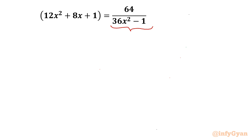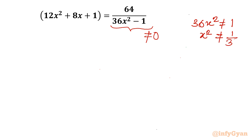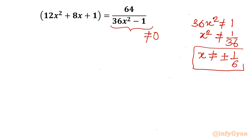The denominator cannot be equal to 0 for the solution to be real. So 36x² cannot be equal to 1, which means x² cannot be equal to 1/36. Therefore x cannot be equal to ±1/6. This is what I was saying — once x is not equal to ±1/6, this is a quartic equation.